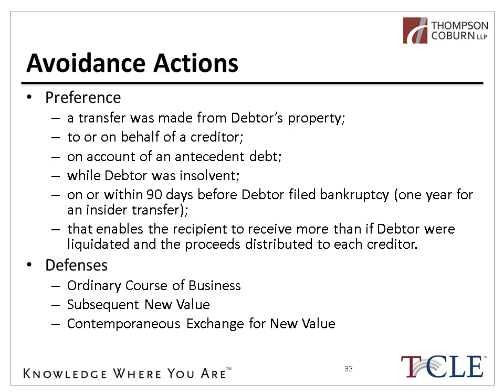Other defenses include subsequent new value and contemporaneous exchange for new value, which are typically a netting effect — if there was a transfer of money from the debtor to the creditor but the creditor also delivered new product or new value to the debtor's estate, there's essentially a netting where there's no real negative effect on the estate. So those can be defenses to a preference.